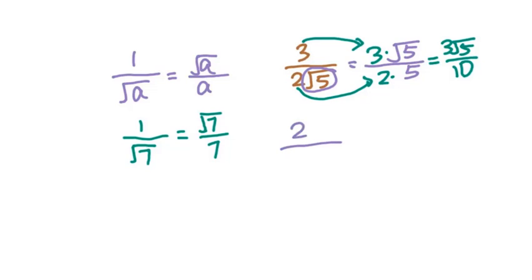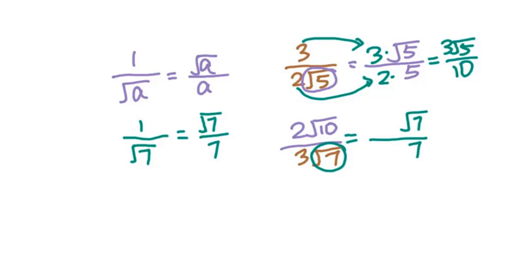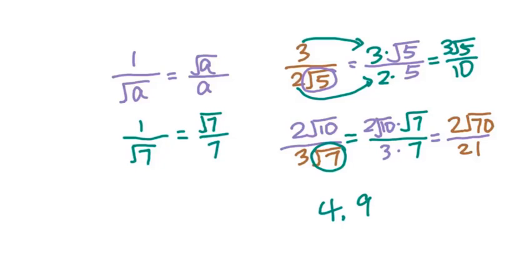Applying this: 2√10 over 3√7 — jump the square root of 7 as √7/7, then carry on 2√10 and 3, multiply to get 2√70/21. Since 70 cannot be divided by 4, 9, 25, or 49, that is already simplified.